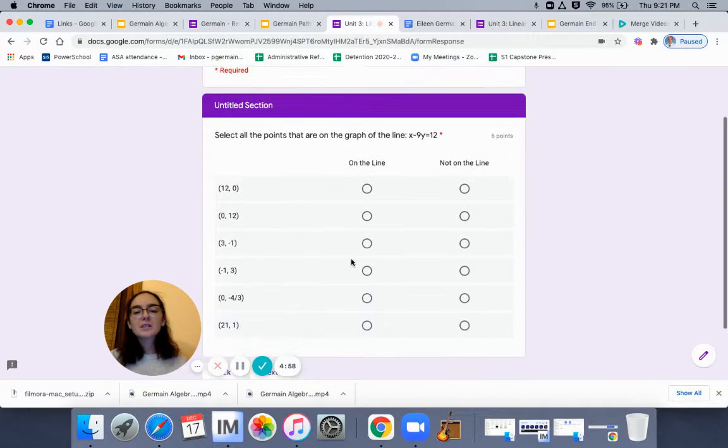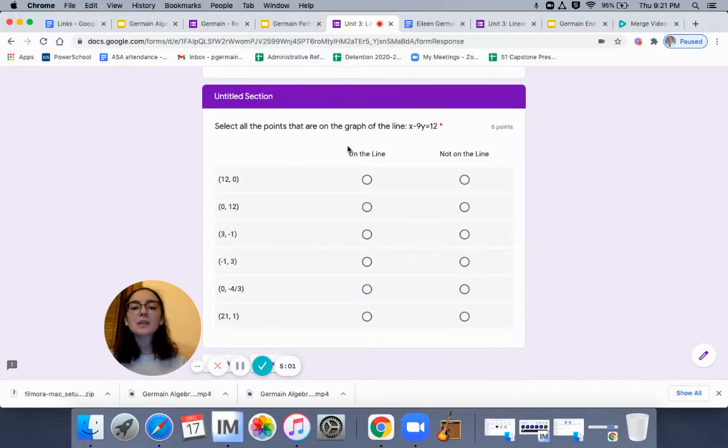So you are once again going to select all the points that are on the graph of the line X minus 9Y equals 12. You're going to select it on the line, not on the line, for each one of these points. You're probably going to need a piece of paper for yourself to do the workout. I suggest that you do it. It would probably be a good idea.